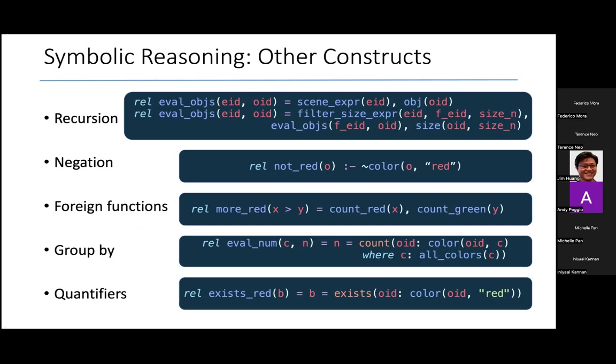We have many other constructs in this language that I'm not going to go into detail, and we are still growing the language. I mentioned that we have recursion, and this expression here shows you, for example, how we can evaluate all the objects in the scene according to certain criteria that I described earlier. We also support negation, foreign functions that cannot be written in logic but might need to be written in a black box language like Python or Java. We also support group by and quantifiers.